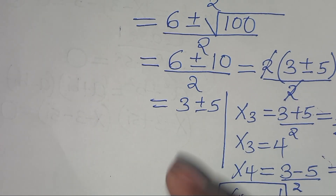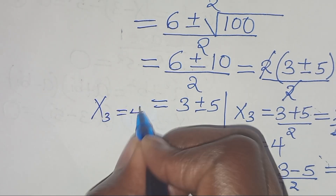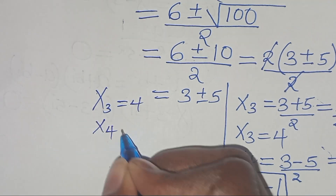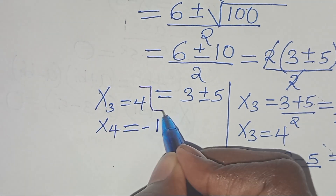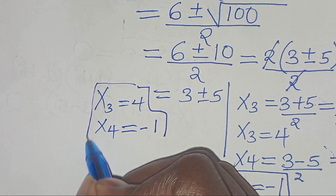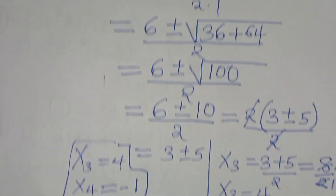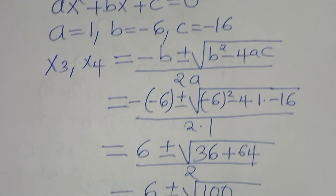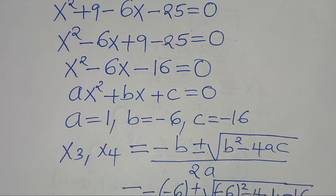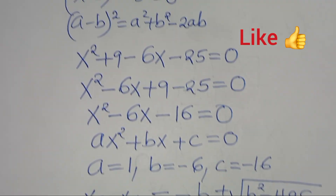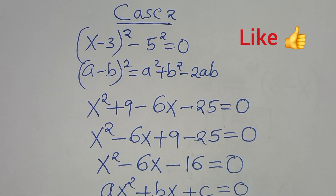So we have x3 equal to 4 and x4 equal to minus 1, giving us 2 real solutions and 2 complex solutions for this algebra problem. Kindly follow the steps, like this video, and subscribe. See you in the next video.